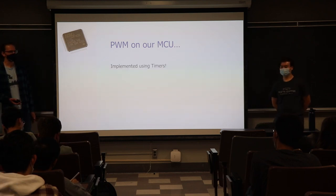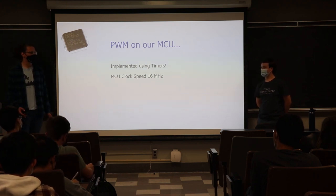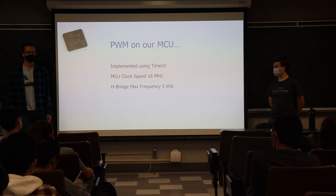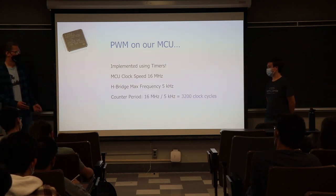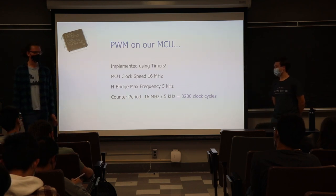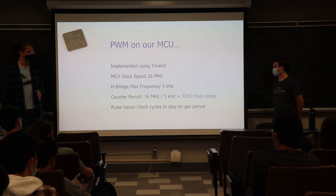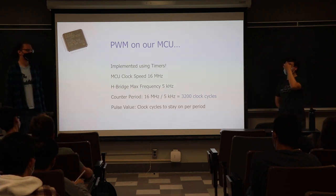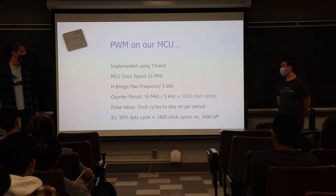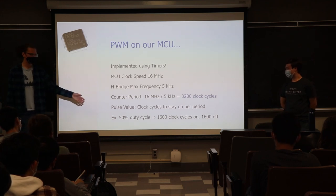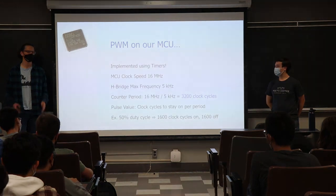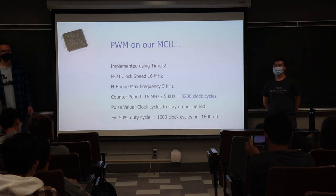To implement PWM on the microcontroller, we use timers. Our microcontroller's clock runs at 16 MHz, and our H-bridge has a max PWM frequency of 5 kHz. By doing division, we can set our timer period to 3,200 clock cycles. So being on for 1,600 cycles and off for 1,600 cycles corresponds to a 50% duty cycle. 3,200 clock cycles is essentially our period.